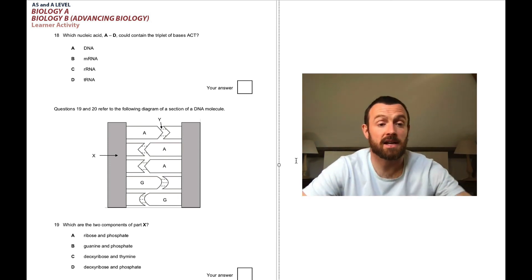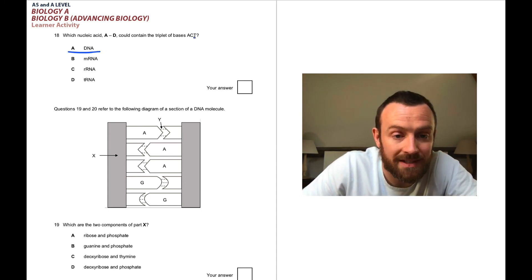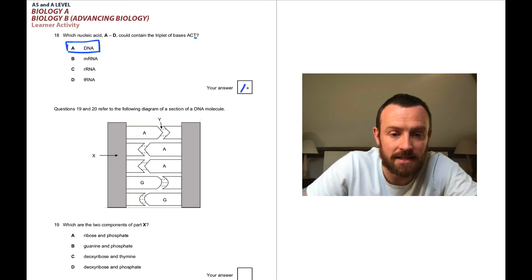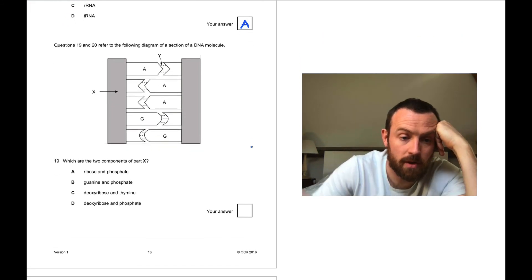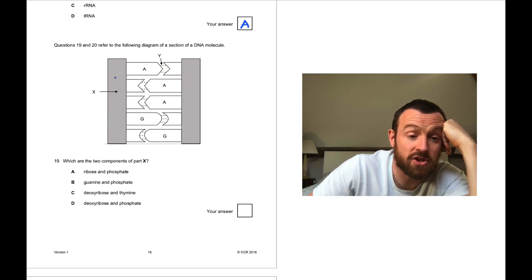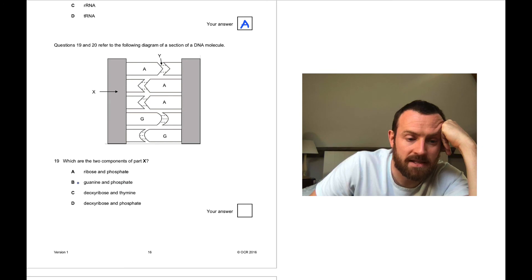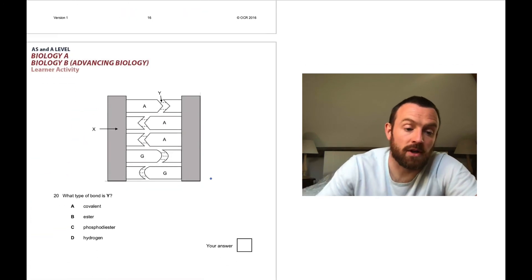Moving on to question 18: which nucleic acid could contain the triplet of bases ACT? This could only be DNA because thymine is replaced by uracil if it's in RNA, so it has to be DNA. 18 is A. Questions 19 and 20 refer to this diagram. Which are the two components of part X? X is the backbone - the sugar phosphate backbone. What sugar and phosphate is it? For DNA we use deoxyribose, so it's D. Ribose would be if this was double stranded RNA. Finally, what type of bond is Y? That is a hydrogen bond between bases.